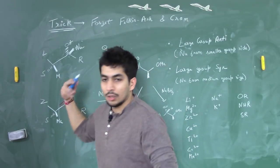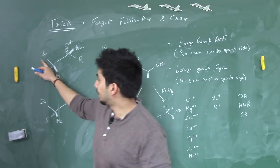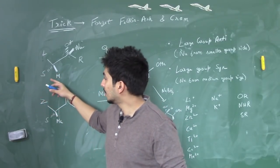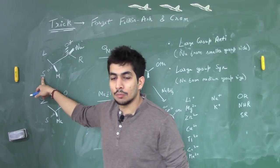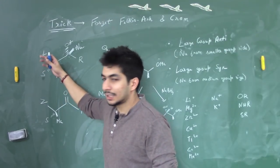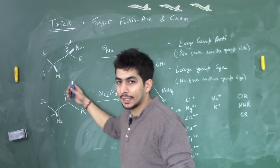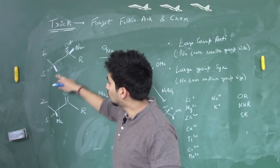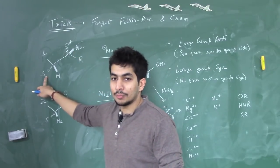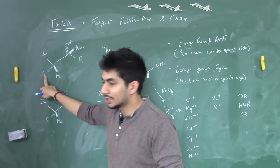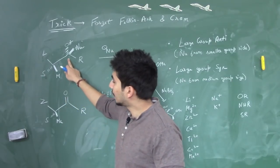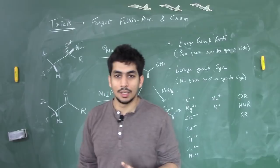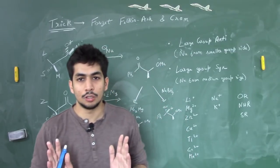In the anti case, if the L group were facing downwards (anti), the nucleophile would attack from the smaller group side. Since the smaller group is below the plane, the nucleophile attacks from below the plane, and the OH forms above the plane. That's the simple trick.